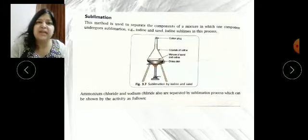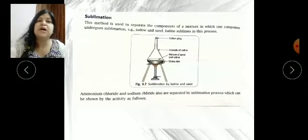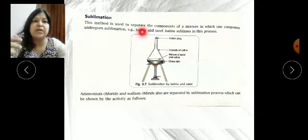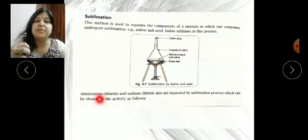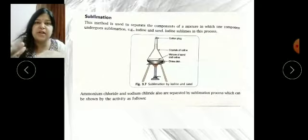Like ice, when we heat ice it converts into liquid water. But few solids are there, few chemicals are there. For example, iodine, ammonium chloride, camphor or kapoor, and naphthalene balls which we use to protect woolen clothes.